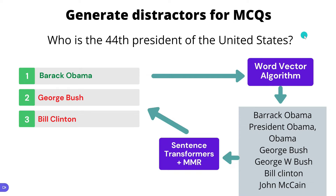Hello everyone, welcome back. In this section we will see how we can generate distractors — that is, wrong answer choices — for multiple choice questions using word vector algorithms and sentence transformer embeddings. For example, if you have a question like 'Who is the 44th president of the United States?' and you know the correct answer is Barack Obama, how do you go ahead and get efficient distractors?